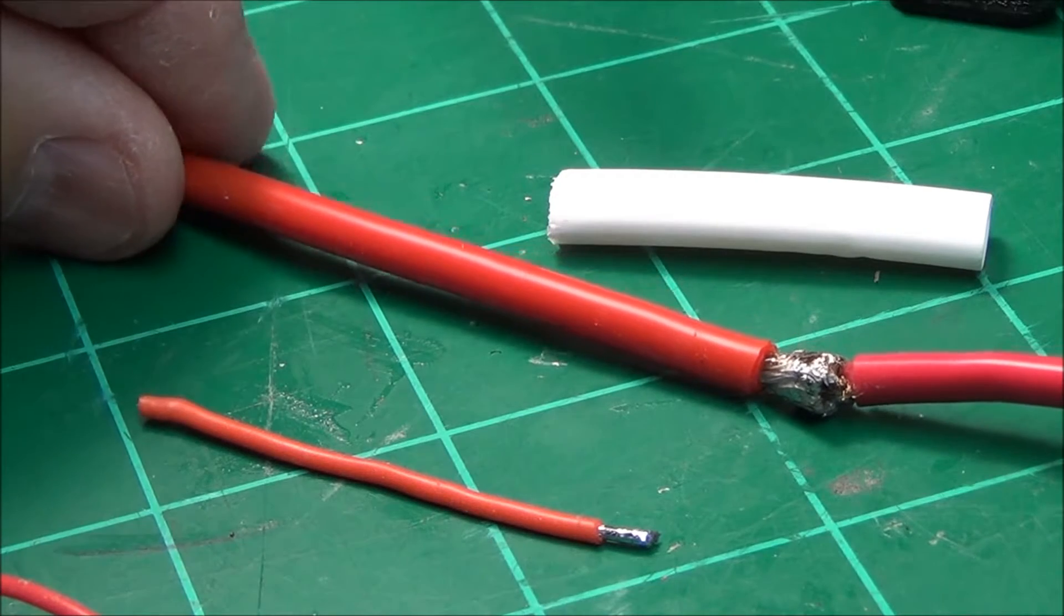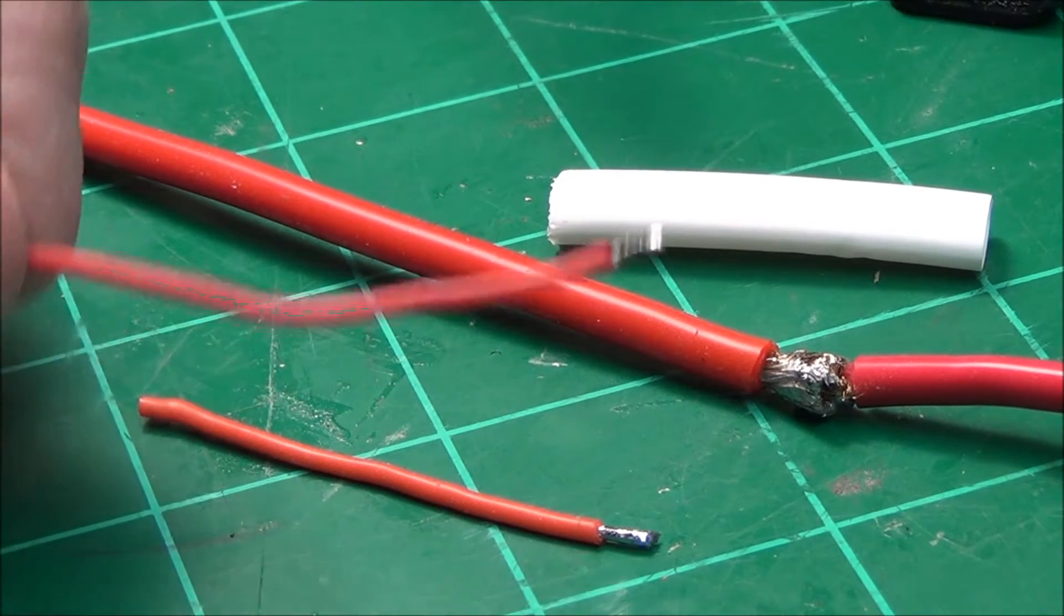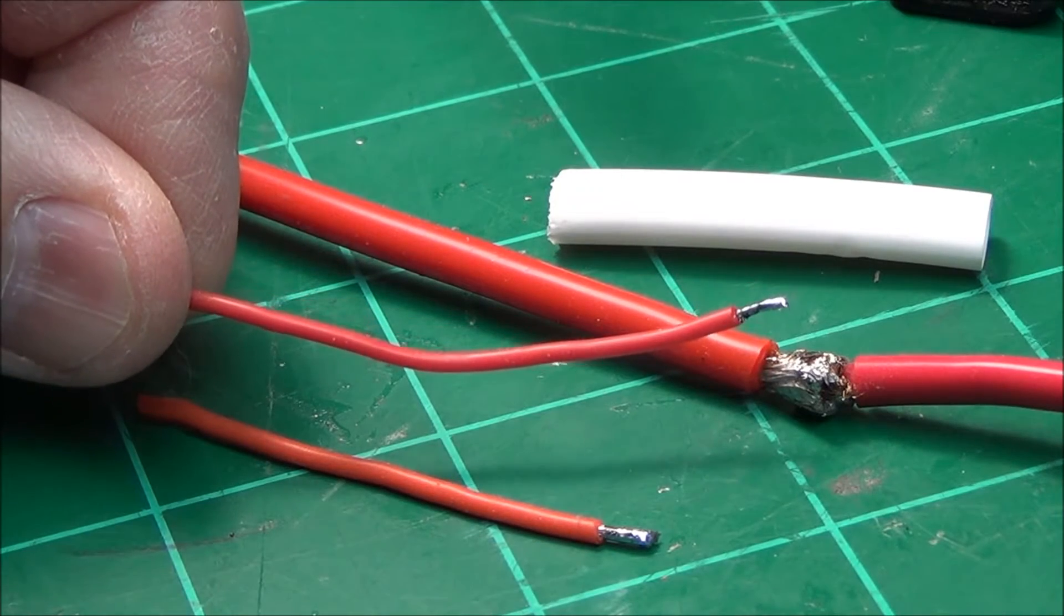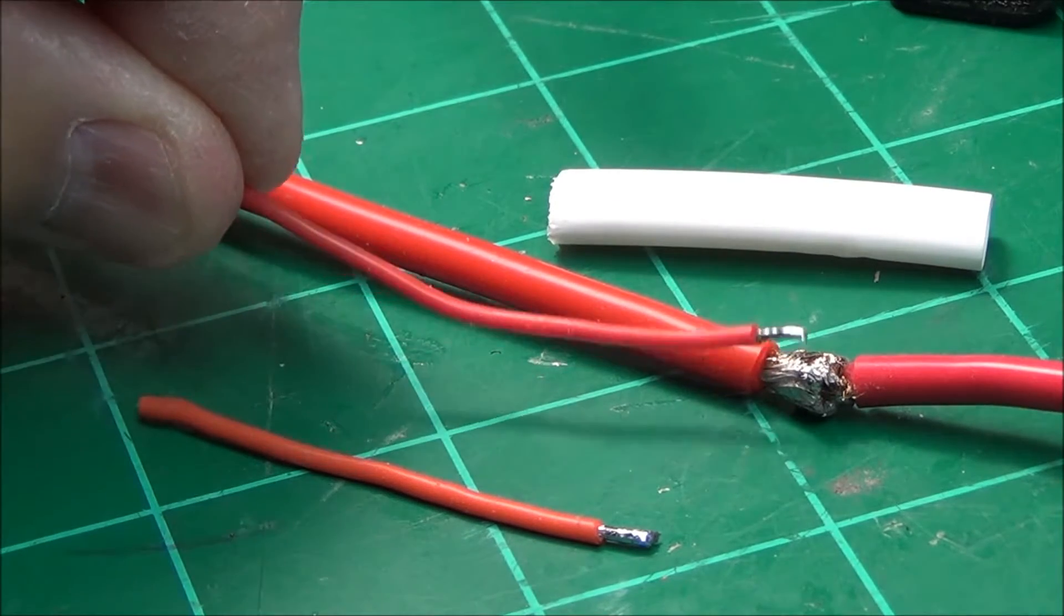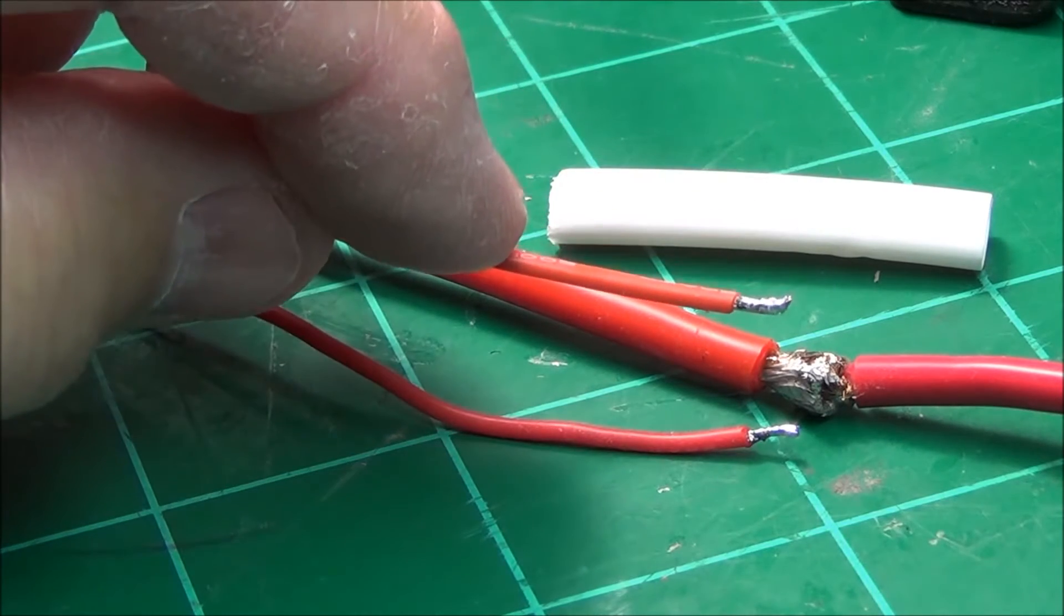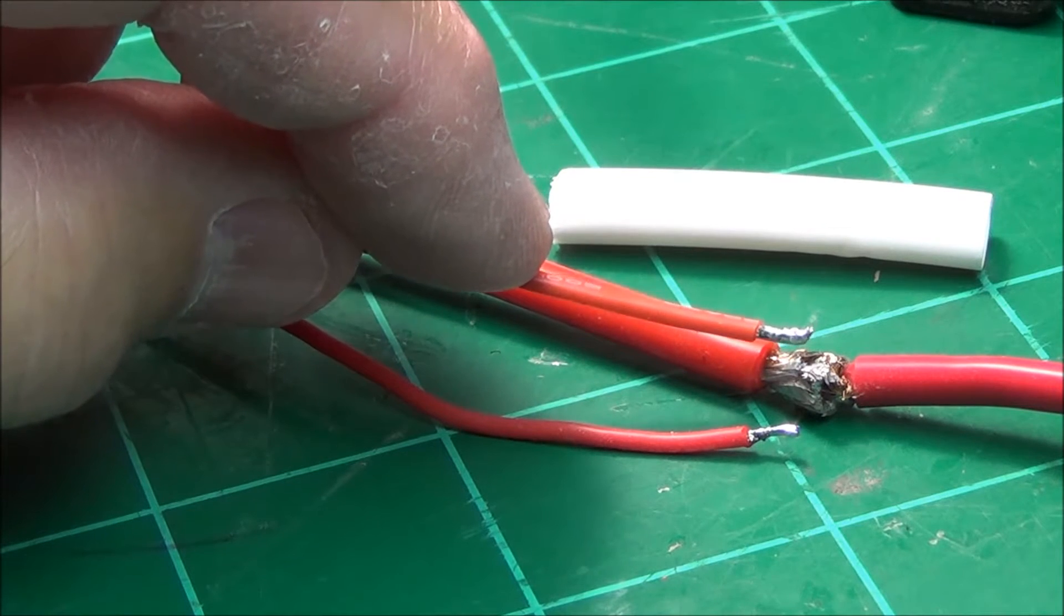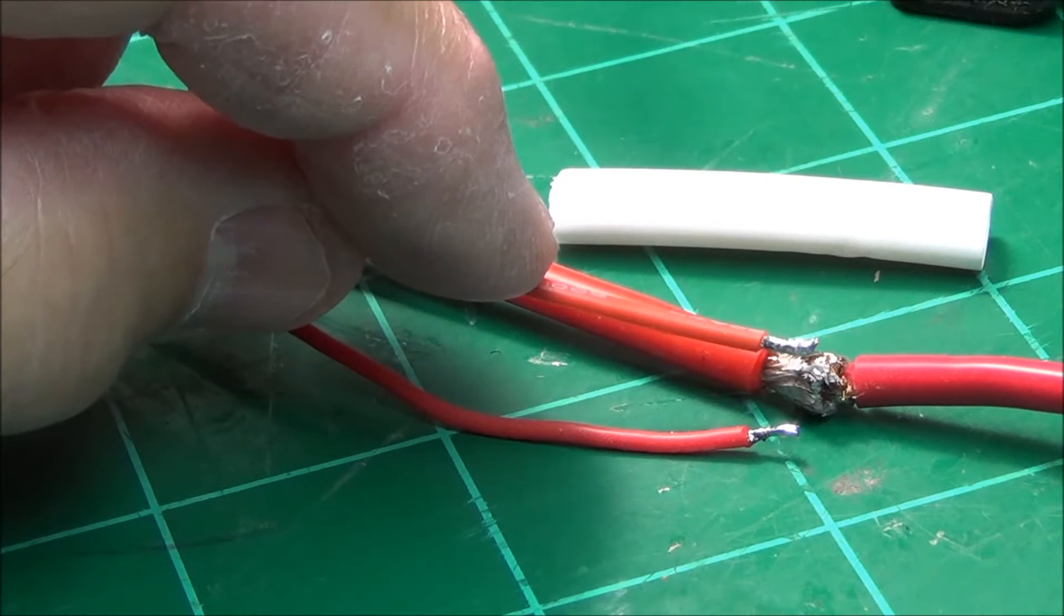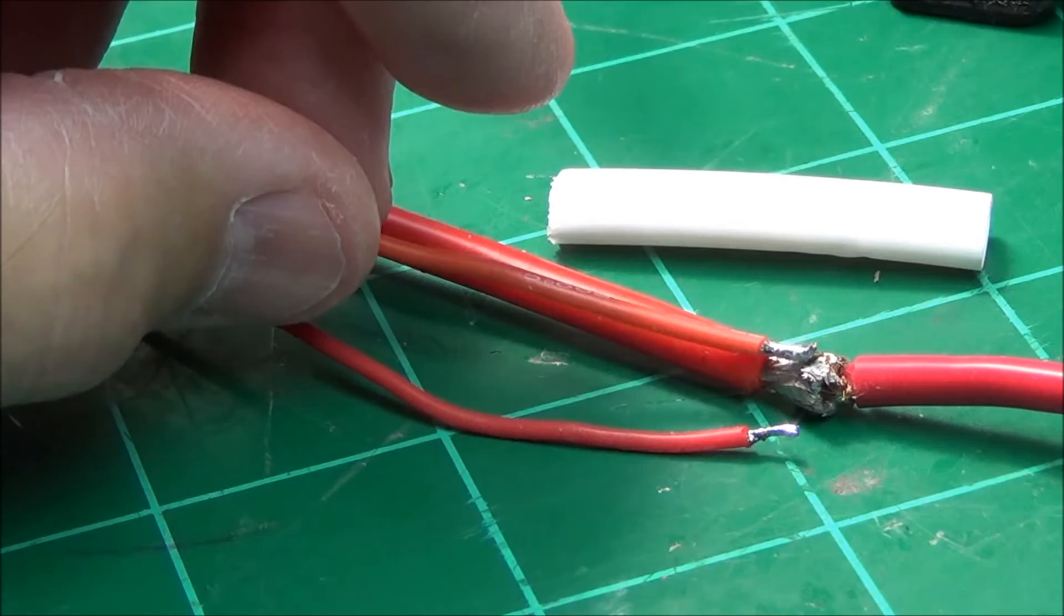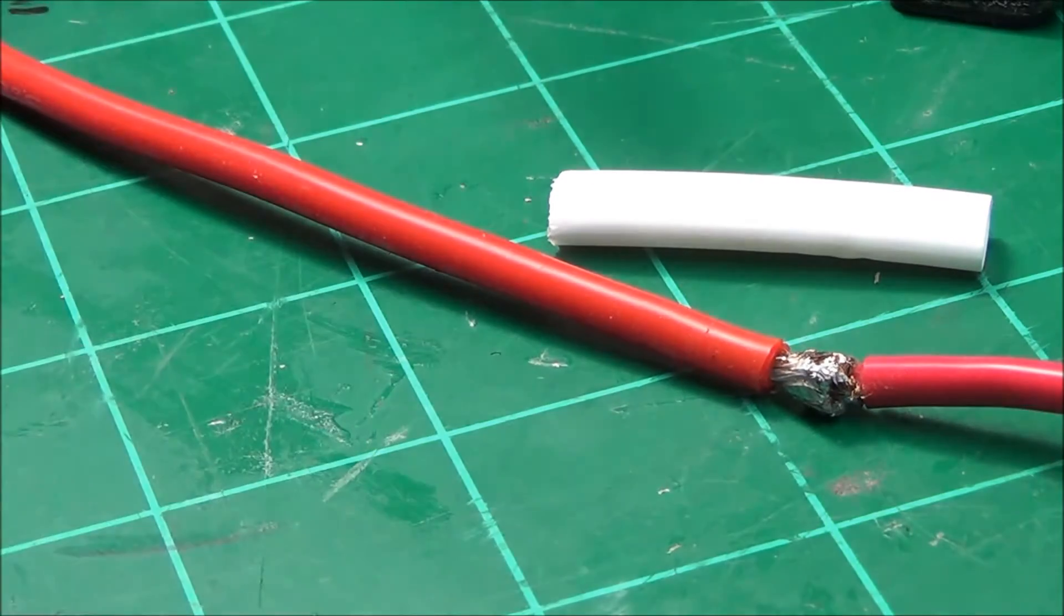Let's say we want to run a UBEC hot wire off of there and we want to run a FPV camera lead 12 volt lead off of here also. So we're going to solder these two small ones to the two big ones.